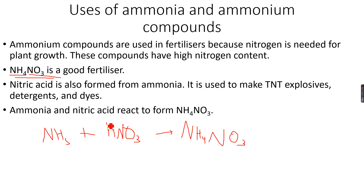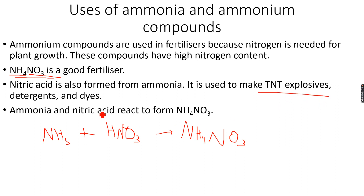Nitric acid is also formed from ammonia — we don't need to know the specific reaction as it's not in our syllabus — but we need to know that nitric acid is formed from ammonia. It has several uses, like making TNT explosives, which is trinitrotoluene, as well as detergents and dyes.